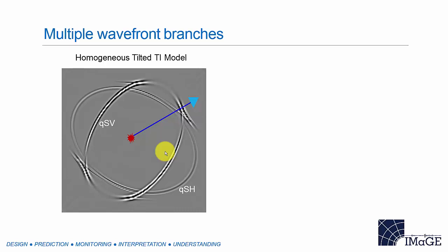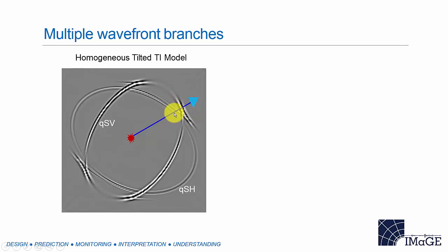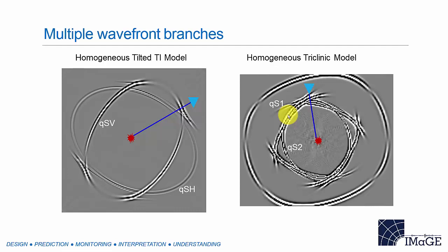Anisotropy adds another dimension to this problem. In addition to multipathing and shadow zone issues, there are multiple wavefront branches due to anisotropy alone. Particularly for the shear wave — as you can see in this simple example — this is a full wavefront solution in a homogeneous tilted transverse isotropic model. The point source is off the plane. We have a quasi-SV wave that develops triplication, and a quasi-SH wave. If you have receivers there, you'll record an early SV arrival, a late SH arrival, and multiple shear waves in between. This becomes worse if the model is triclinic — low-symmetry anisotropy.